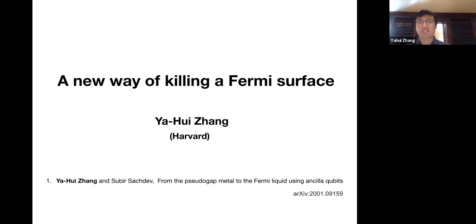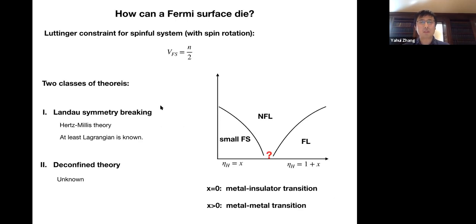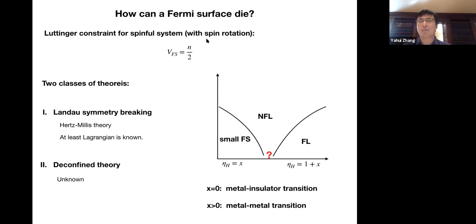Hello everyone. Thanks for coming and thanks for the opportunity to speak here. In this talk I will discuss our recent work, a paper I wrote together with Subir Sachdev. The problem we wanted to discuss is a very old one: how we can destroy Fermi liquid. Everyone knows the Luttinger constraint — if we have a spin-1/2 problem with spin rotation symmetry, the Fermi surface volume must be n over 2, where n is the total density because there are two spins.